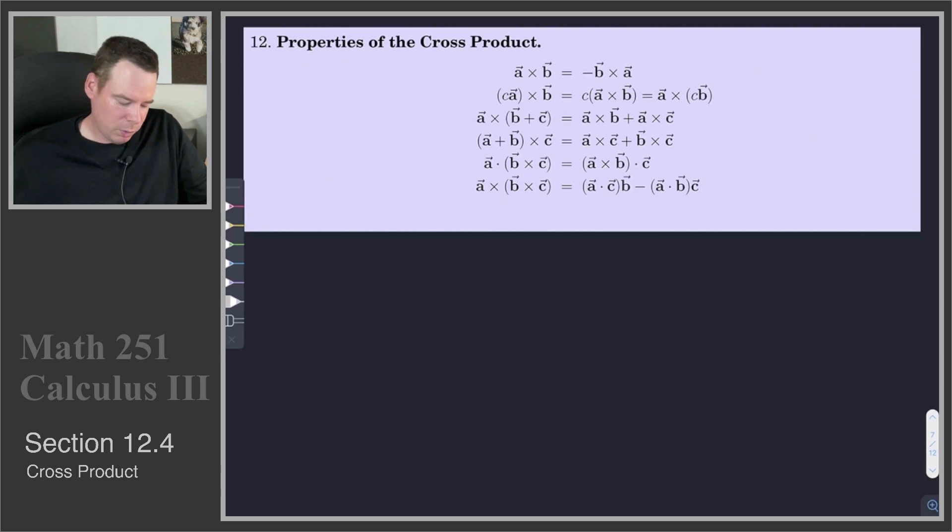There is a distributive property. A will distribute across a sum in terms of the cross product. And we also have listed here the distributive property from the right as well. So the cross product distributes across a sum.